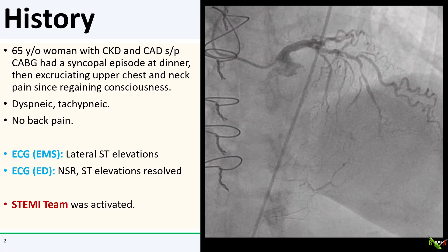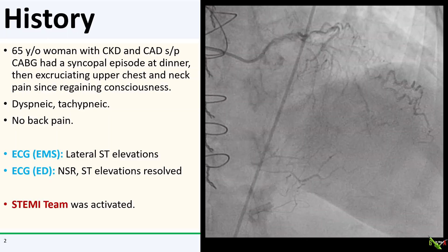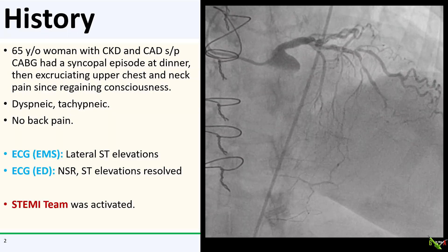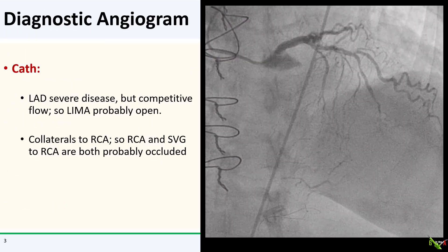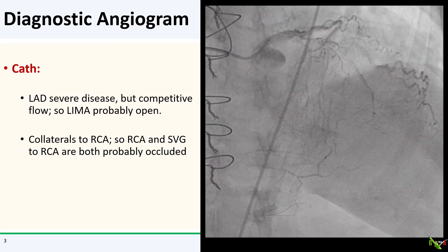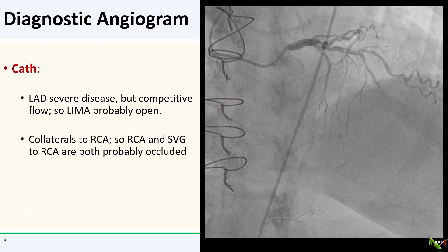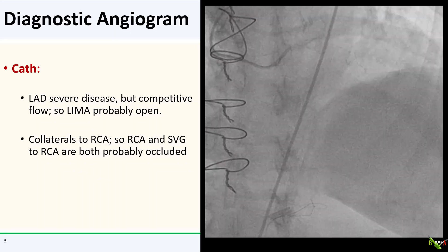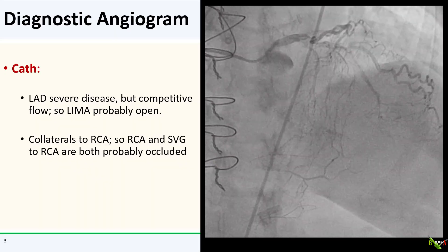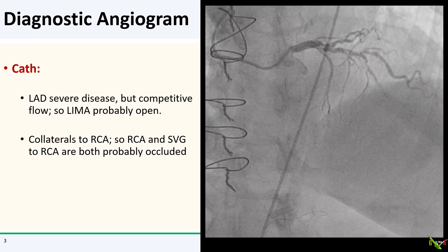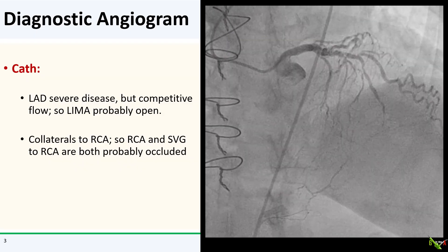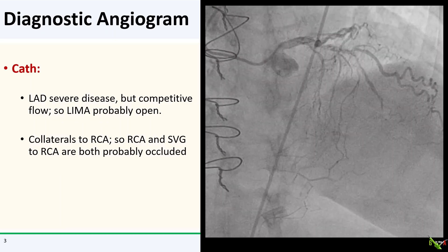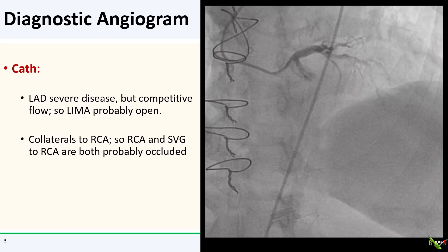Her CABG anatomy was unknown to us, but I was expecting to see an acute occlusion of the graft to the circumflex territory. On my first shot, there is severe disease in the LAD but competitive flow to the distal LAD, so the LIMA graft is probably good. There are also collaterals to the RCA, which tells me that the RCA and probably the graft to the RCA are both occluded or severely diseased.